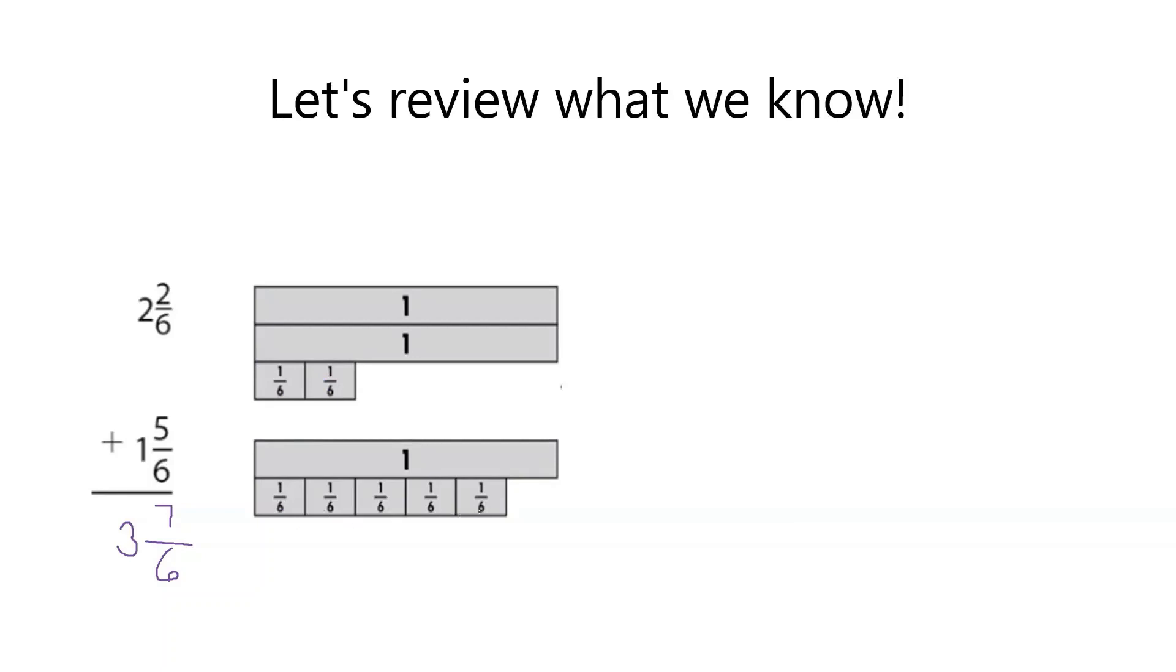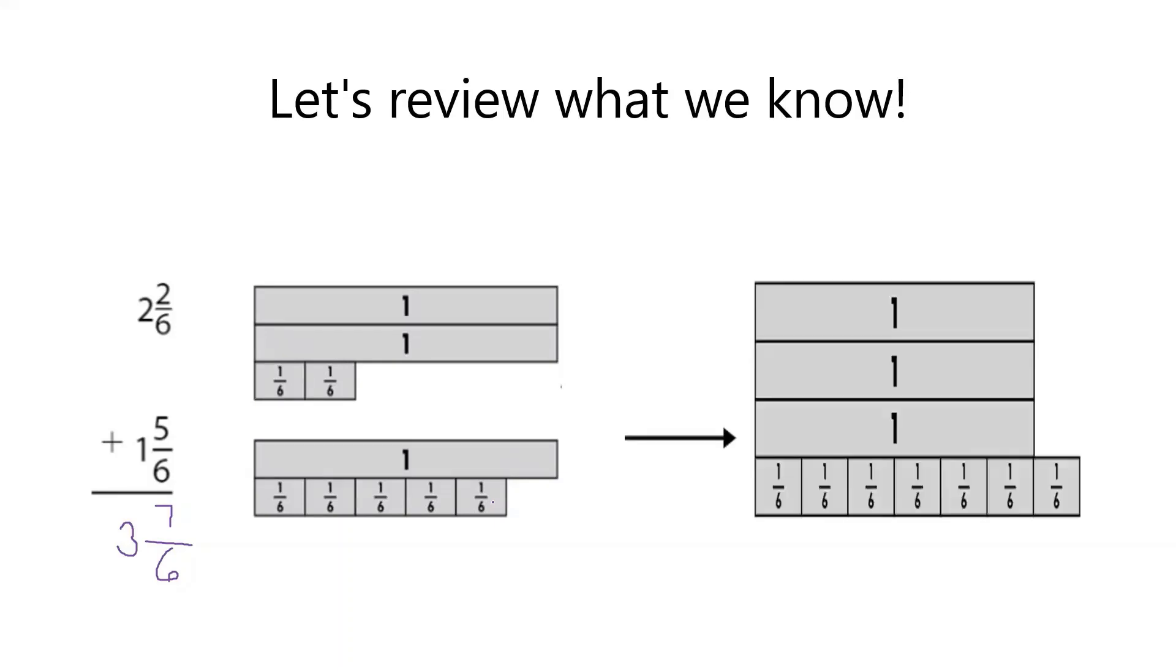So 1/6, 2/6, 3/6, 4/6, 5/6, 6/6 plus 5/6 and I got 7/6. So I want to do the same thing. So I added up my fractional parts first, which gave me 1/6, 2/6, 3/6, 4/6, 5/6, 6/6, 7/6. And I added up my whole numbers next. I have 1, 2, 3.